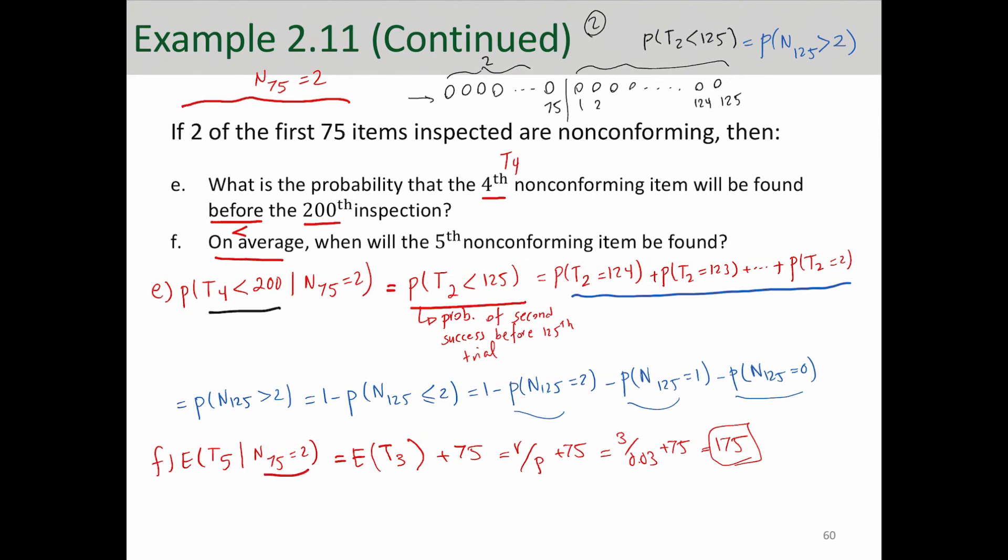And that's because of this condition. Well, if we didn't have that condition, the expected value would be just 5 over 0.03, which is about 167. Well, this condition essentially increased the average number of inspections by a little bit.